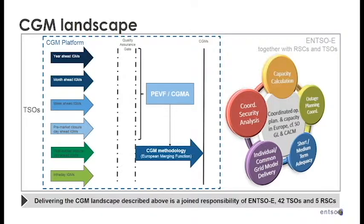The landscape has been defined as a joint responsibility of ENTSO-E. There are 42 TSOs participating in this program and five regional security coordinators. Each TSO chooses a regional security coordinator who is responsible for coordinating area security, and who can make the merge taking the IGMs from their region. The goal is to have a common grid model covering the whole of Europe.